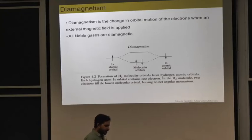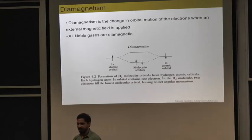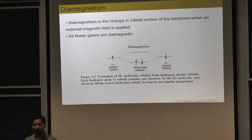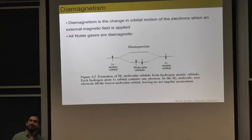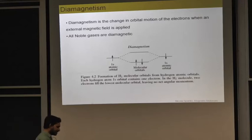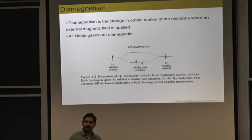In a cruder way, you can say if an atom has its shells filled such that all of the electrons are paired — there is no unpaired electron left inside the system — then it is called diamagnetism. This is the reason all the noble gases are diamagnetic in nature.